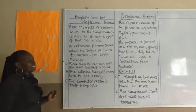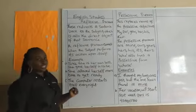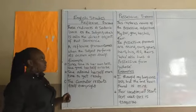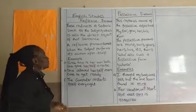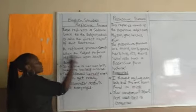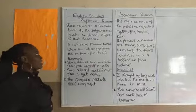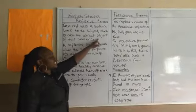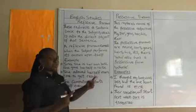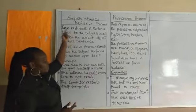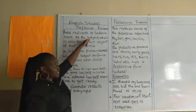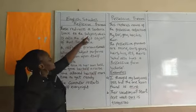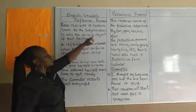Reflexive pronouns redirect a sentence back to the subject, in which the subject now becomes the object of the sentence. Reflexive pronouns occur when the subject performs an action upon itself. Remember that the subject is the doer of an action, and the object is the receiver of an action — so normally these are two different people. But in reflexive pronouns, the sentence is about the subject, but also the subject becomes the object. That's why we said it redirects a sentence so that the subject now becomes our object.